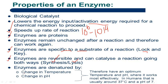Enzymes are denatured if the temperature is high or if the pH is high. We will talk about these properties in detail. Since they are proteins, they will be denatured when there is a rise or decrease in temperature, or a change in pH. In our body, the optimum temperature at which enzymes work most effectively is 37 degrees centigrade, and the optimum pH is 7.